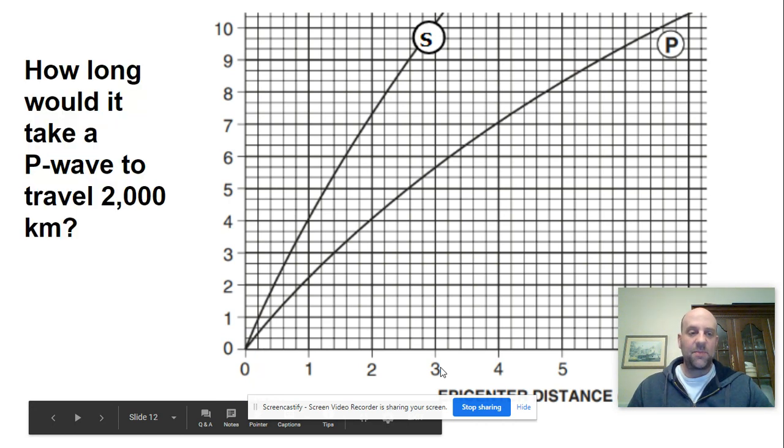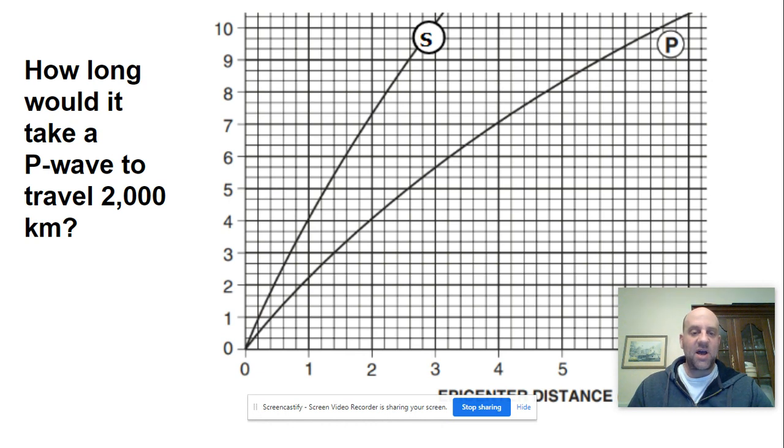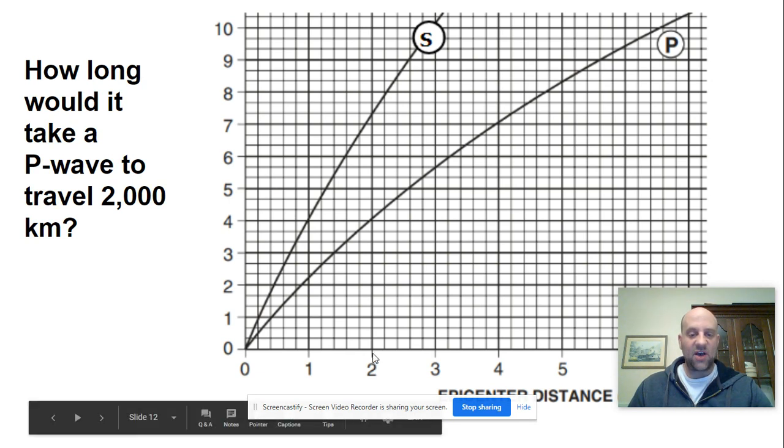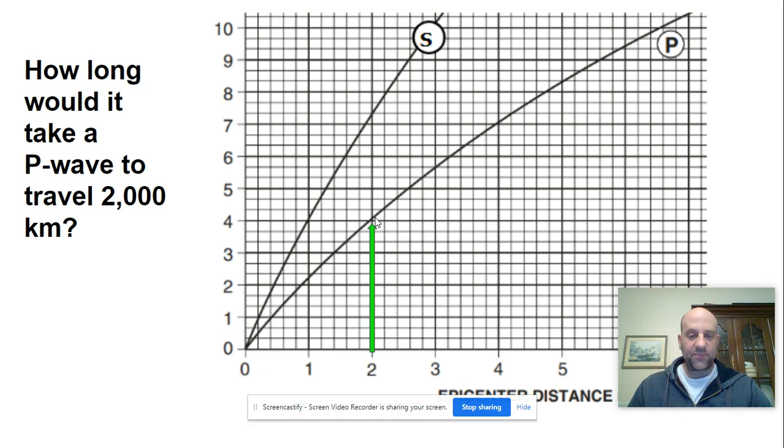We're going to take a look at a couple of example problems. For example, we might want to know how long would it take a P-wave to travel 2000 kilometers. To solve that problem, we would first locate 2000 kilometers on the x-axis, draw a line up to the P-wave, and then go over to the y-axis. We would see that would take 4 minutes of travel time for a P-wave to cover 2000 kilometers.